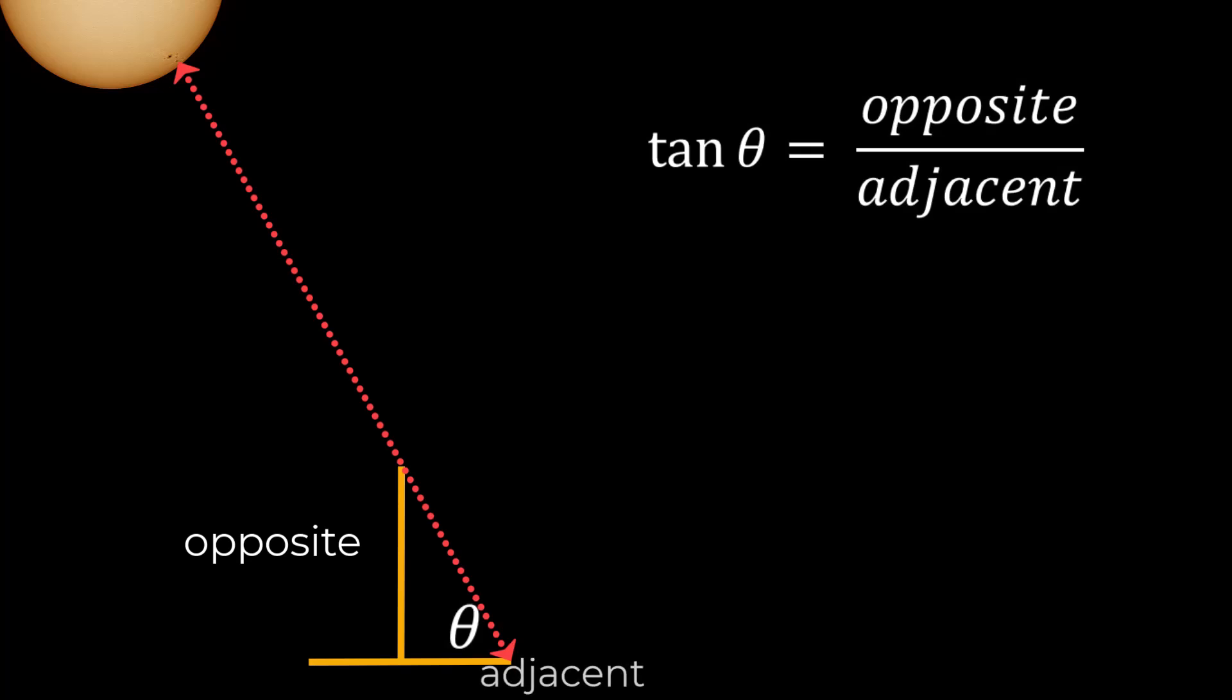To calculate that angle is actually very straightforward we're going back to old high school trigonometry we're going to use tangent. Remember that the tangent of any angle is the length of the side opposite divided by the length of the side adjacent.